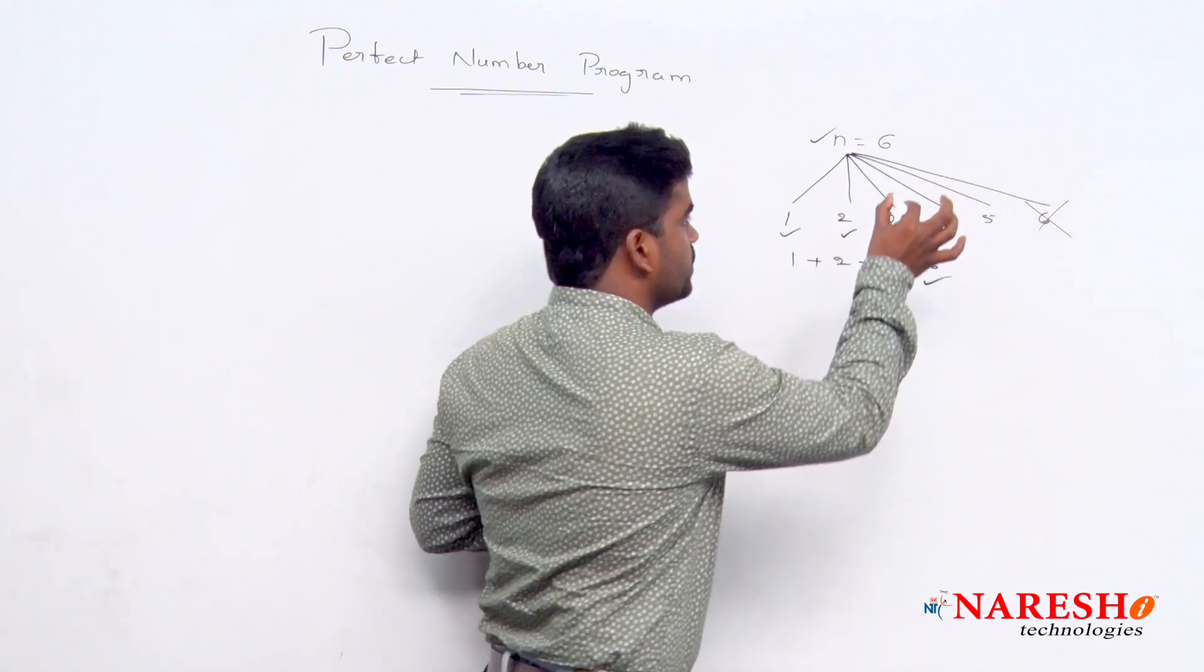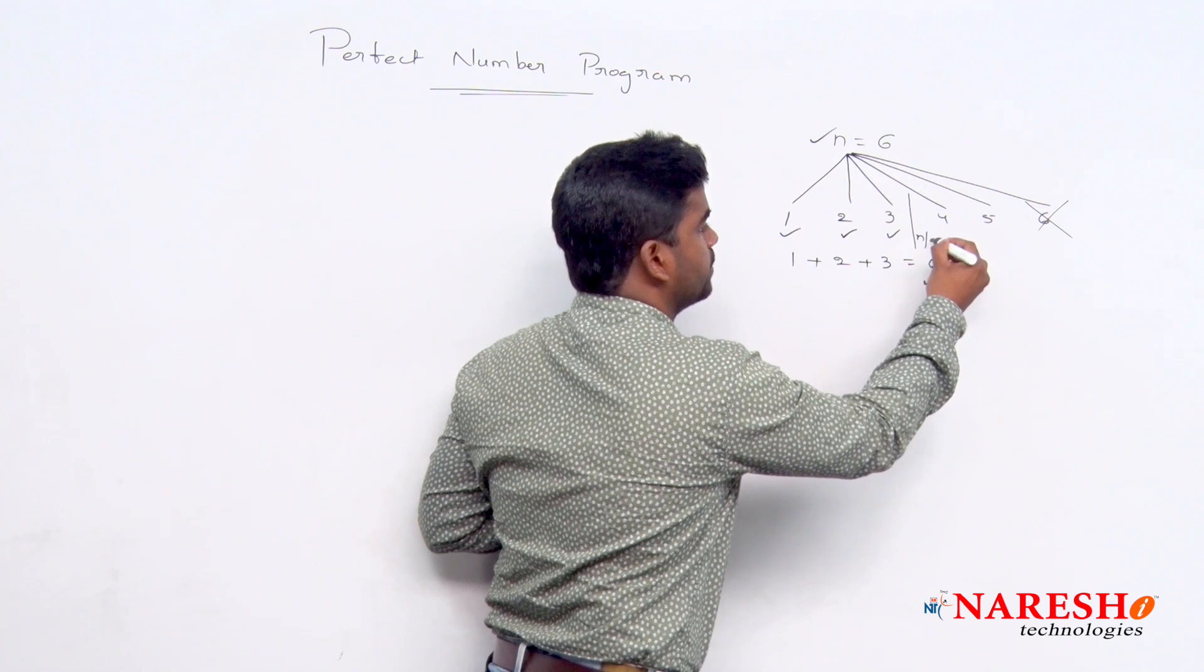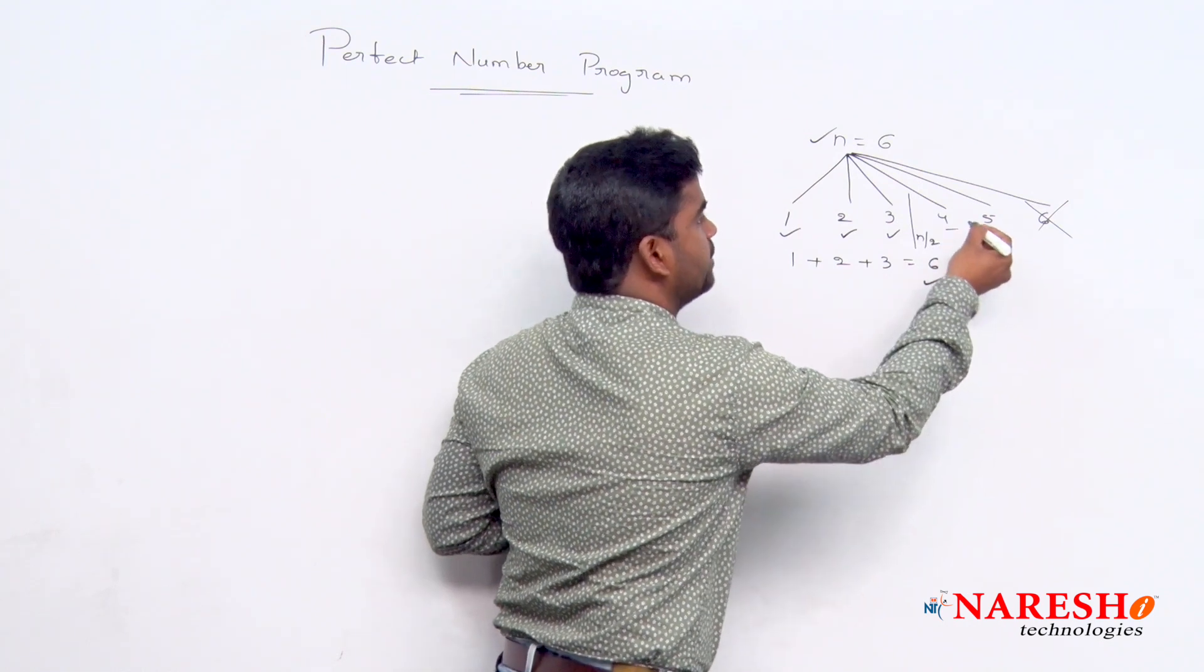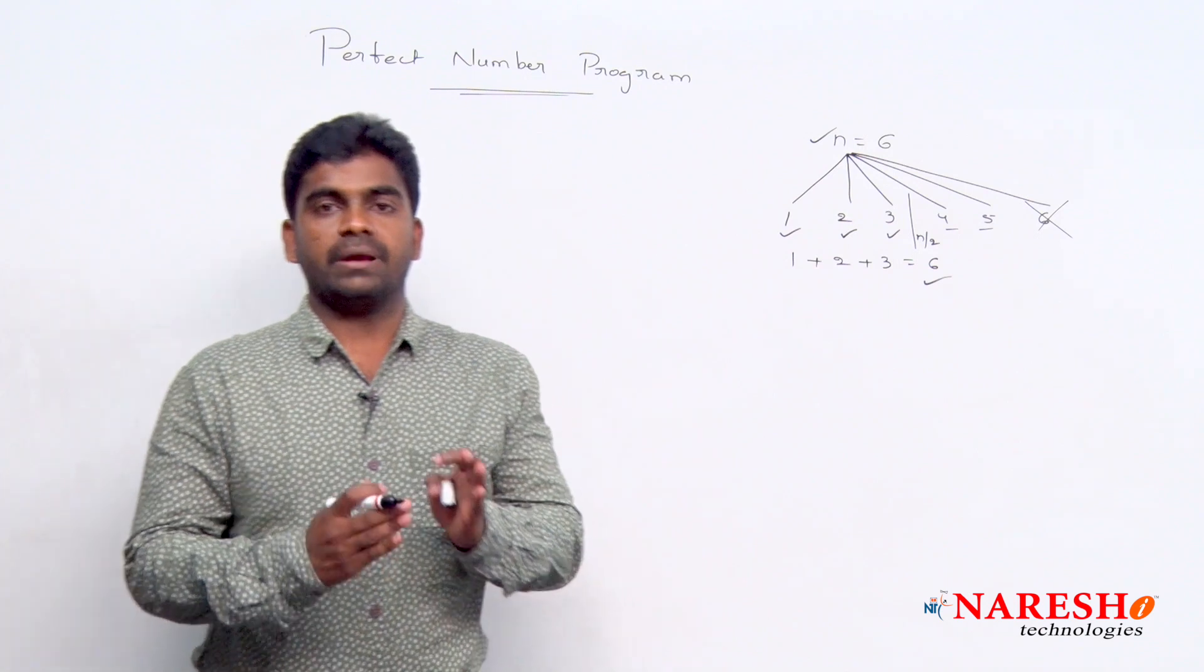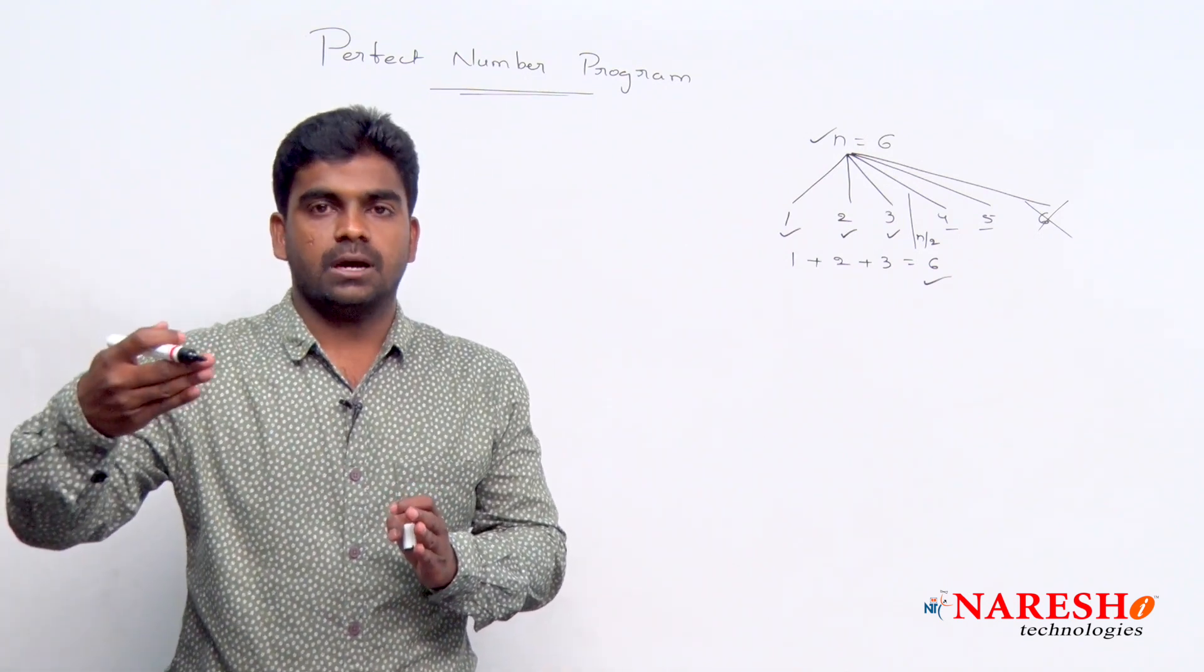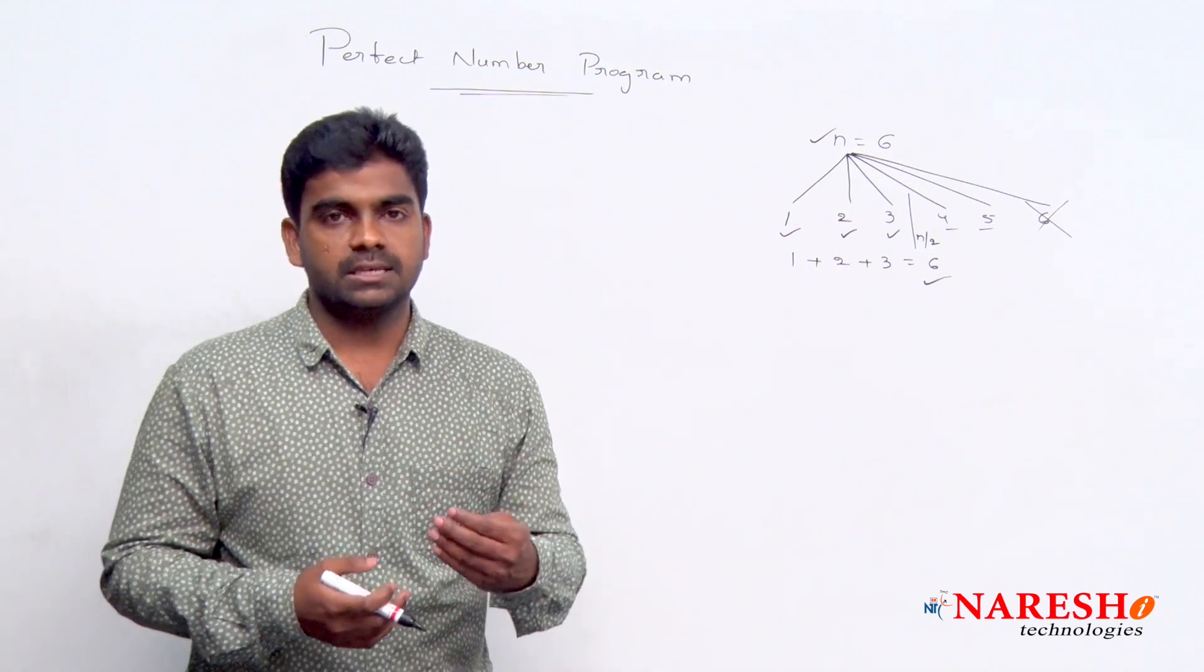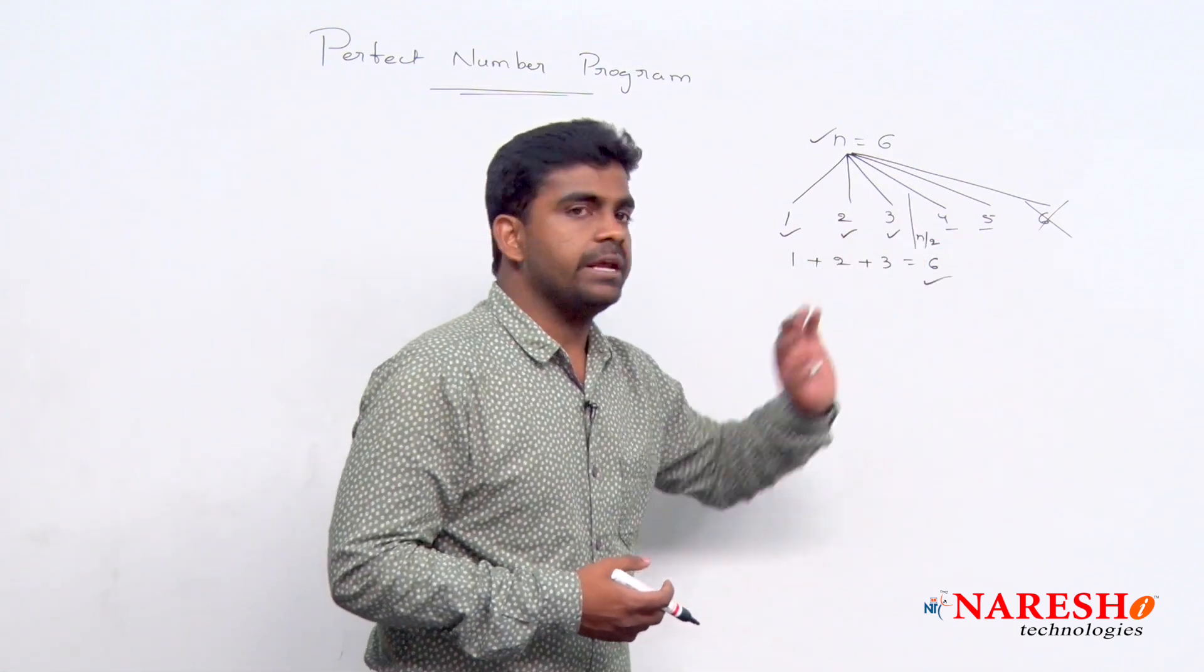And here, we are checking up to n by 2 only, because the remaining are not divisible with n. From n by 2, the remaining highest values are not dividing with that n. That is the reason we are checking up to n by 2.